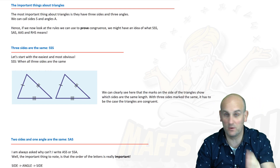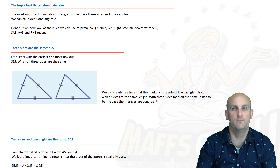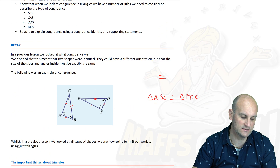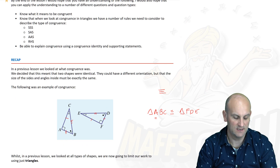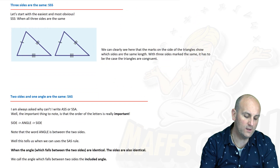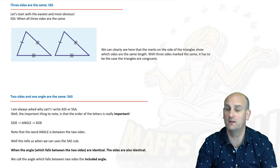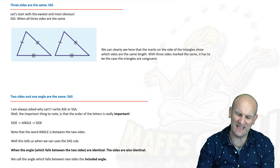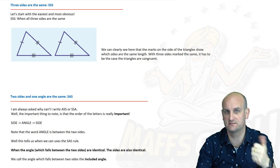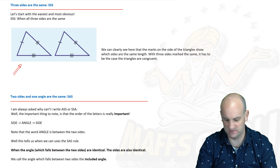Going back to what you've done in previous year levels, we talk about triangles in terms of the length of their sides and the size of their angles. Side begins with S and angle begins with A — and that brings us back to the rules: SSS, SAS, AAS, and RHS. When we look at triangles and try to talk about congruence, we can apply four rules. The first and easiest one is SSS. SSS stands for side-side-side, meaning the triangle is congruent because all three sides are the same length.